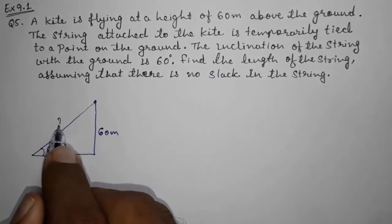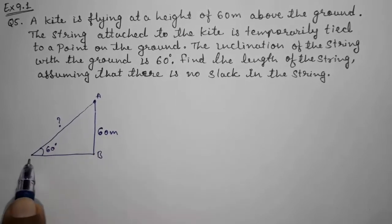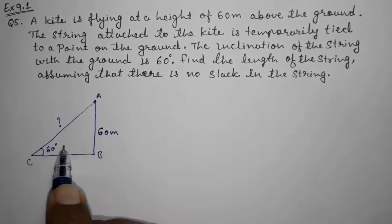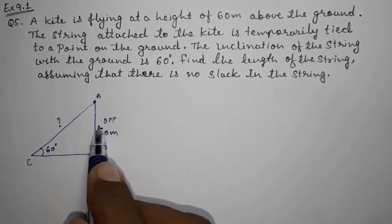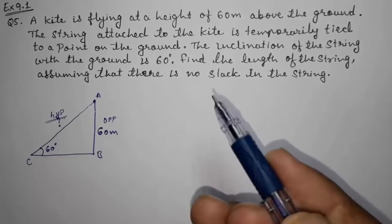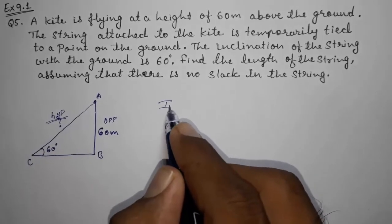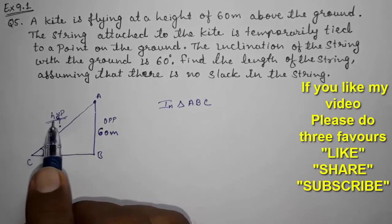Now look here in this triangle ABC. We are having this 60 degree angle, and we are having this opposite side. We want to find the hypotenuse. So how can we find out? Again in triangle ABC, we are having the opposite and we want to find out the hypotenuse.